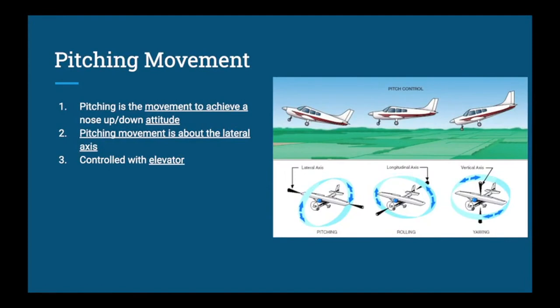To achieve nose-up and nose-down attitudes, we have to pitch the airplane. The pitching movement is about the lateral axis of the aircraft, which goes wingtip to wingtip. It is controlled with the elevator — the control surface on the rear attached to our horizontal stabilizer. On the control yoke: pull back to pitch the nose up; push forward gently to pitch the nose down.